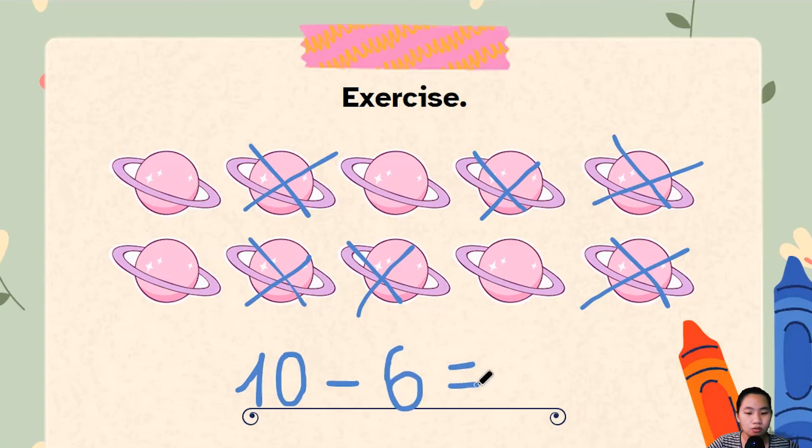Ten minus six equals how many do I have left? I have four, all right? If you said four, you're correct. I have four. The difference between ten and six is four.